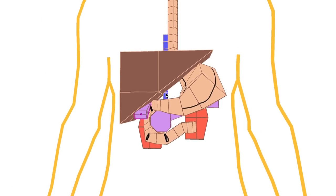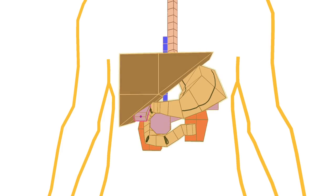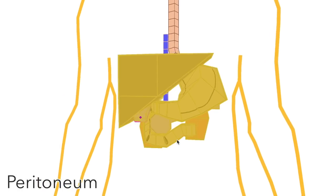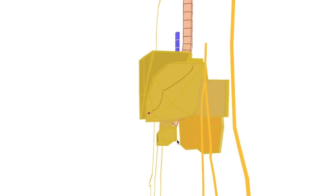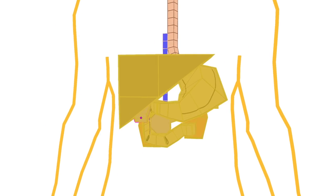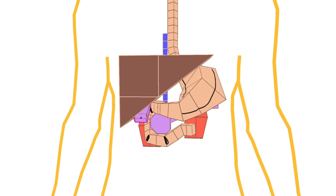Just before we go any further on that point, all the organs in the abdomen are covered in this fine membrane called peritoneum. If we opened up somebody's abdomen, they'd actually look a bit more like this. But, for simplicity's sake, let's remove all that now.